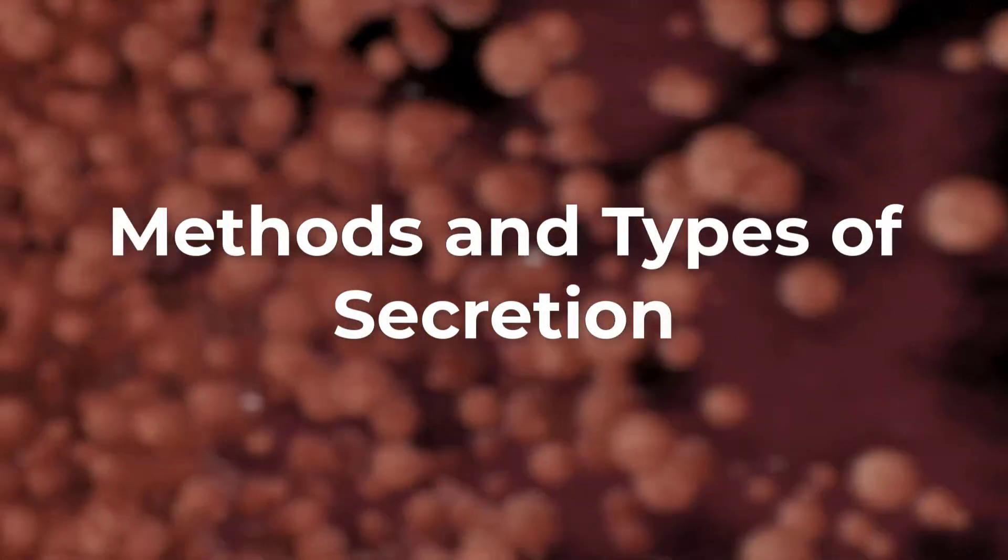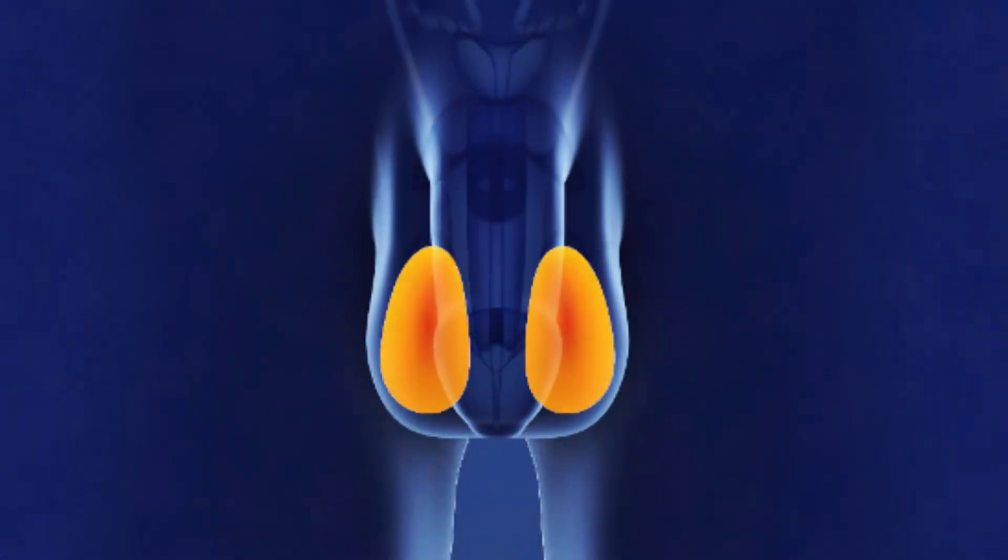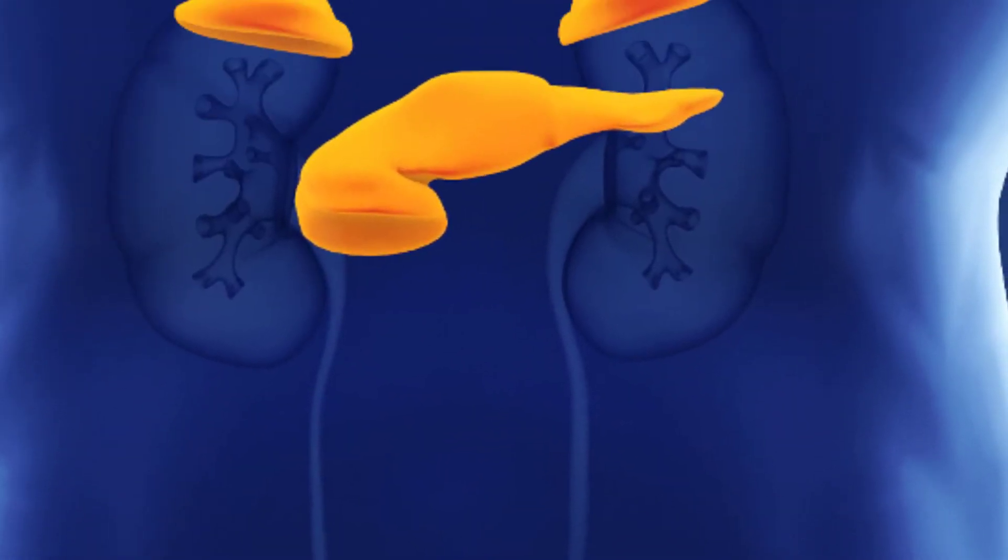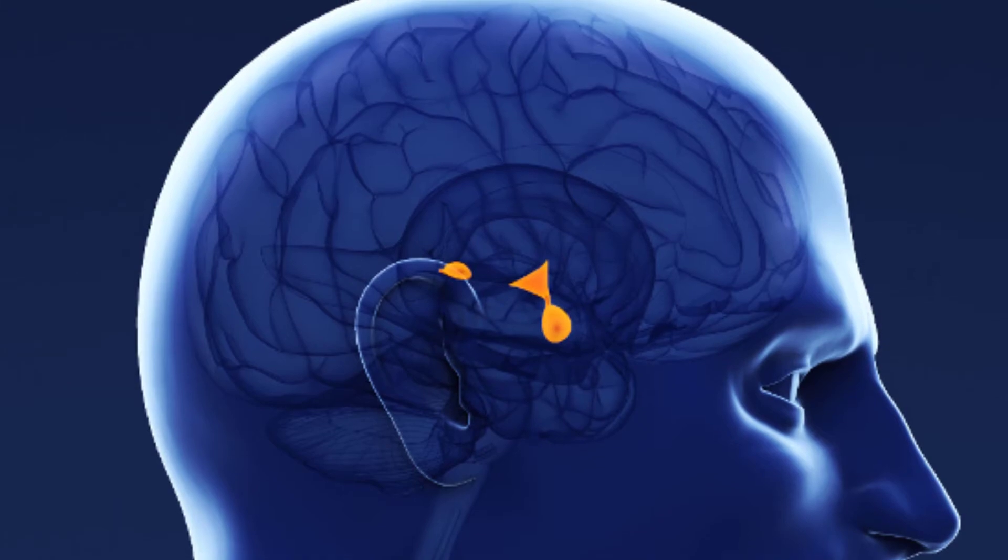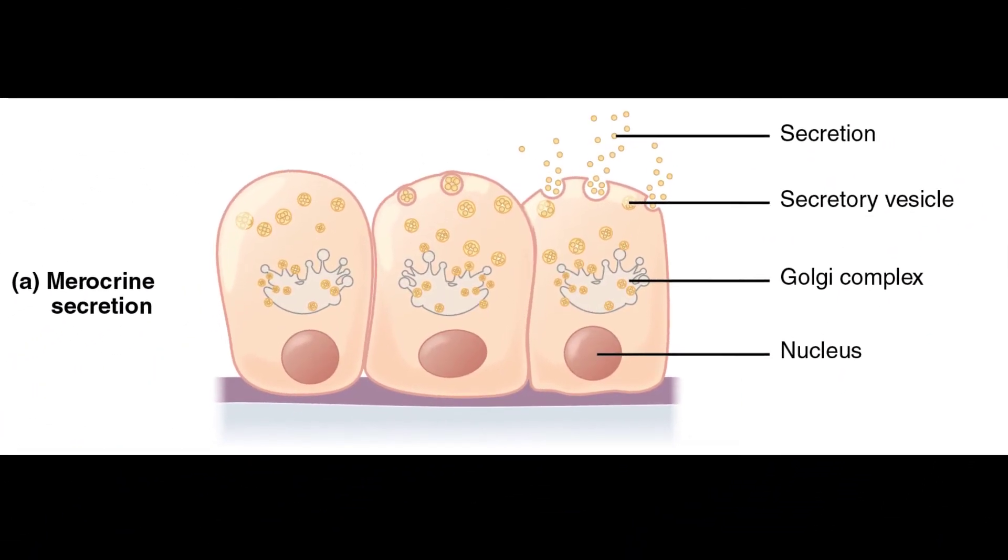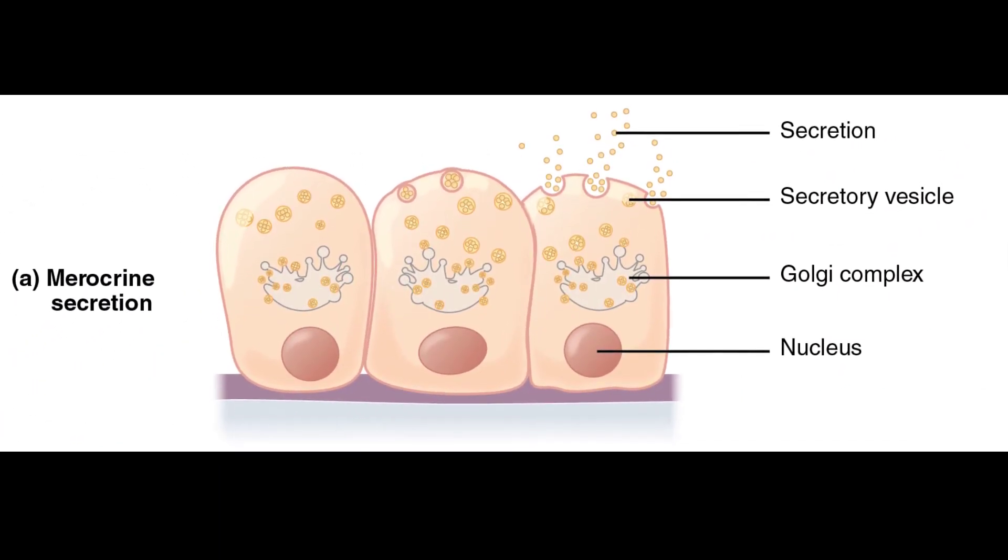Methods and types of secretion. Exocrine glands can be classified by their mode of secretion and the nature of substances released, as well as by the structure of the glands and shape of the ducts. Merocrine secretion is the most common type of exocrine secretion. The secretions are enclosed in vesicles that move to the apical surface of the cell, where then the contents are released by exocytosis.